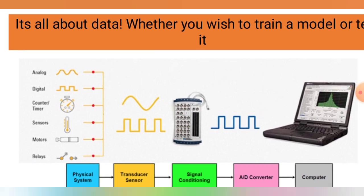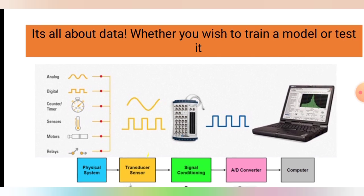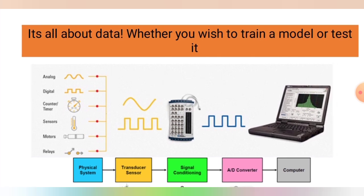The second data format is digital format. These are the standards of the data. The third one is a counter or timer-based dataset. The fourth one is a sensor dataset. The fifth one is a motors dataset, in terms of displacement and other values. And the sixth one is relays, which are used in electrical systems.